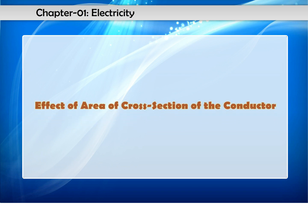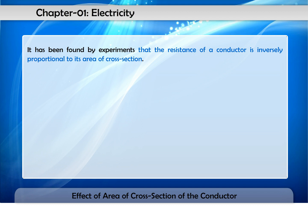Effect of area of cross-section of the conductor. It has been found by experiments that the resistance of a conductor is inversely proportional to its area of cross-section. That is, resistance are inversely proportional to 1 upon A.